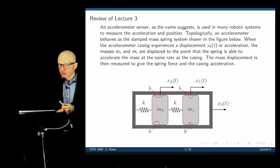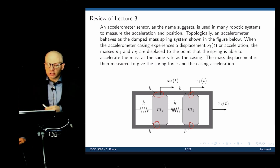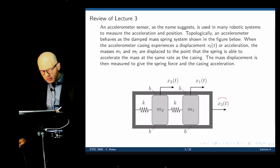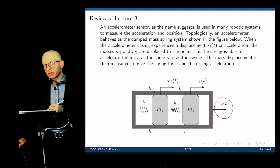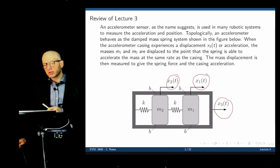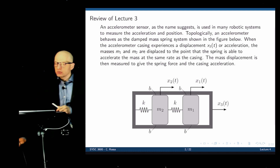The way this works is that if you accelerate the casing, the masses will be subjected to a force and they move. By measuring how much they move, we can quantify the acceleration of the casing. This is a more advanced model of the accelerometer. The casing is given a displacement X3, and the displacement of each mass inside is X1 and X2.